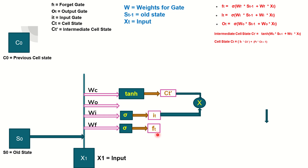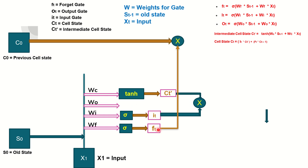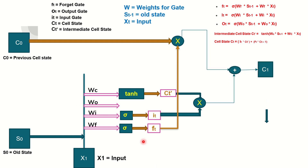The next step is to calculate the forget gate FT through sigmoid: FT = sigmoid(WF × S0 + WF × X1). With FT computed, we multiply it by C0 (the previous cell state) to get FT × C0. Adding this to the earlier result of IT × CT-bar through an adder gives us C1 — the updated cell state. The cell state is now updated to C1, and the only unused weight so far is WO, which we will use next.